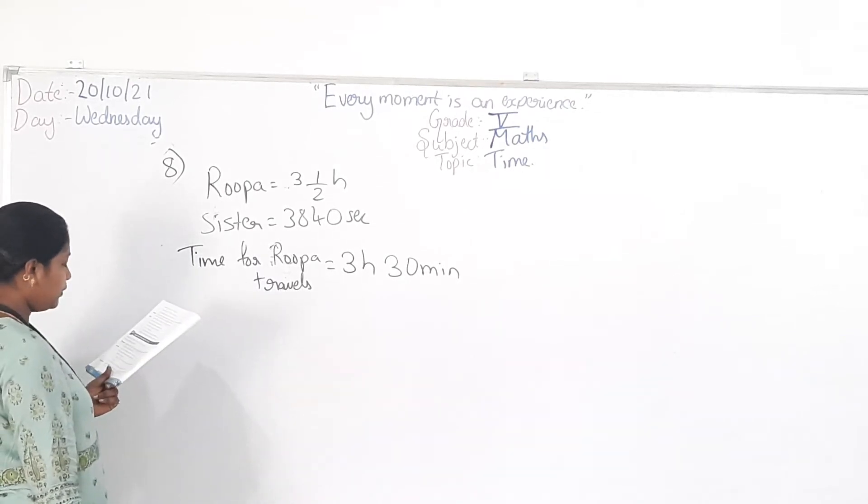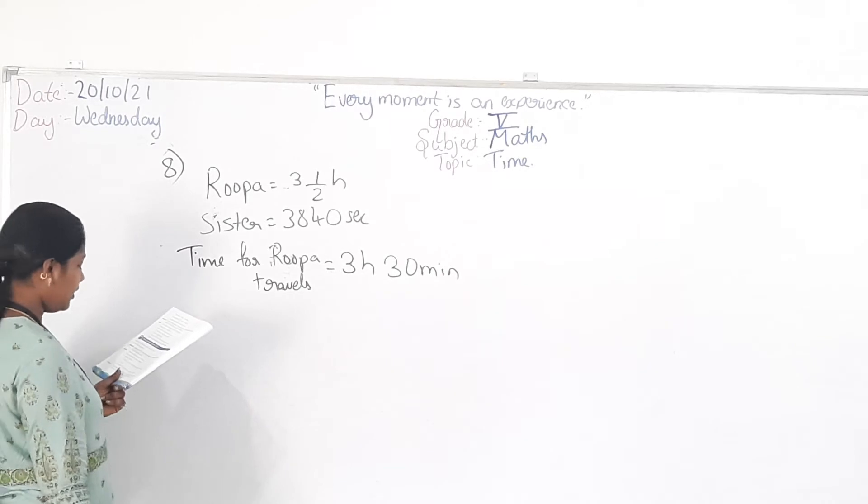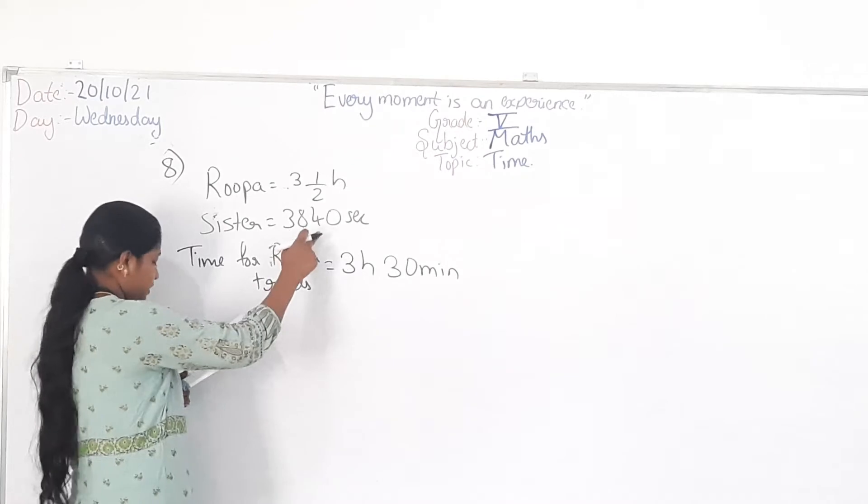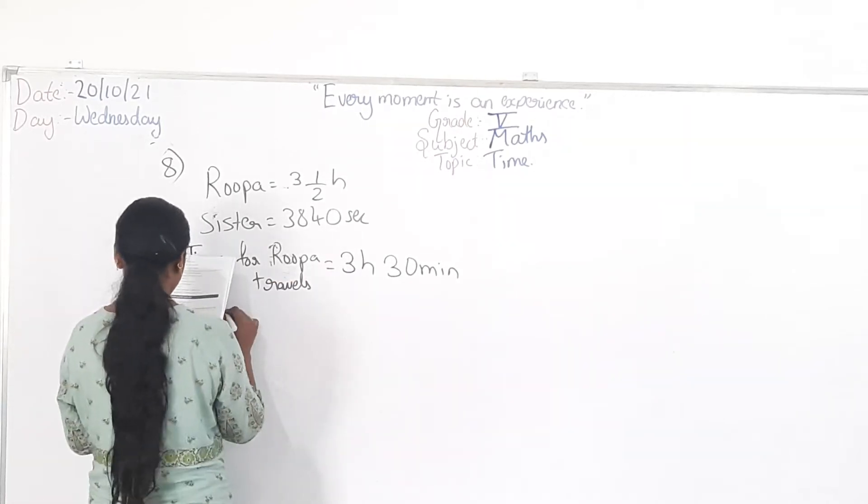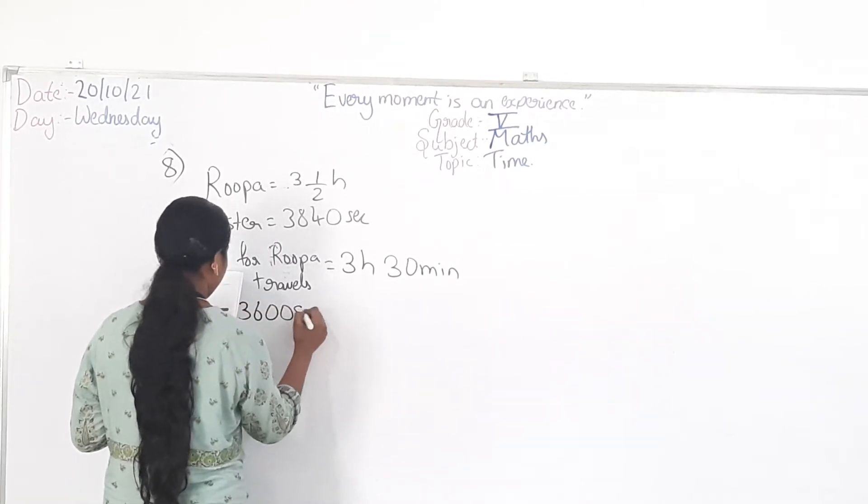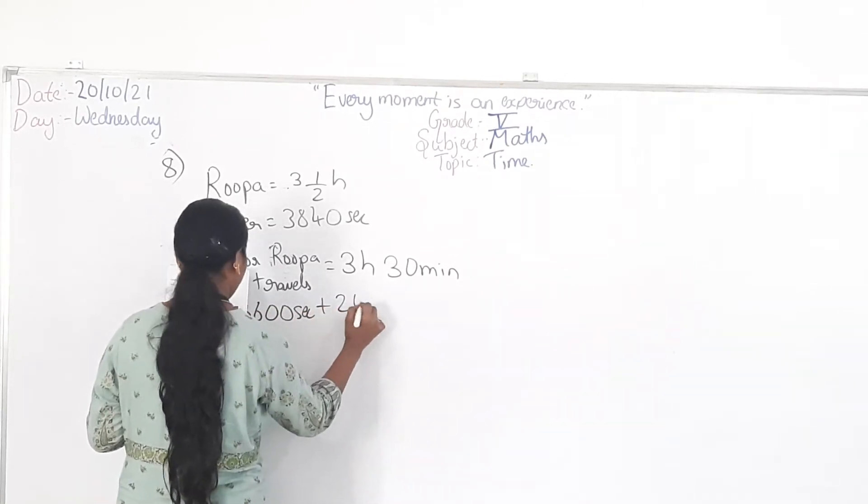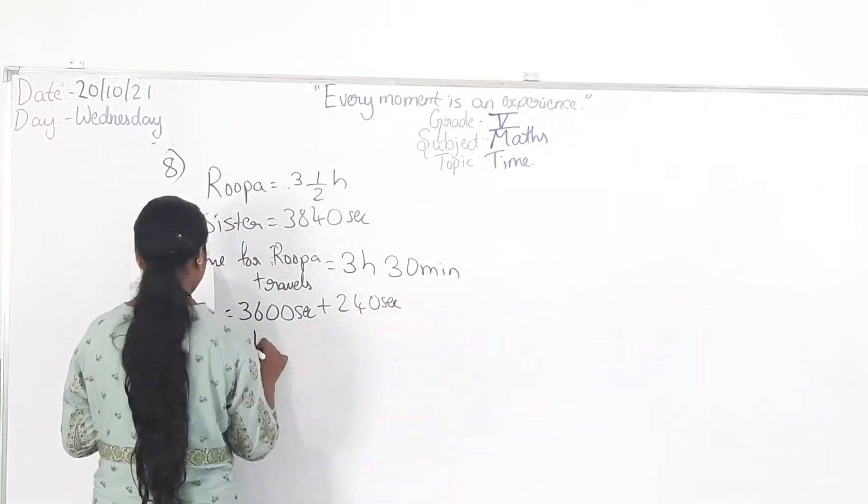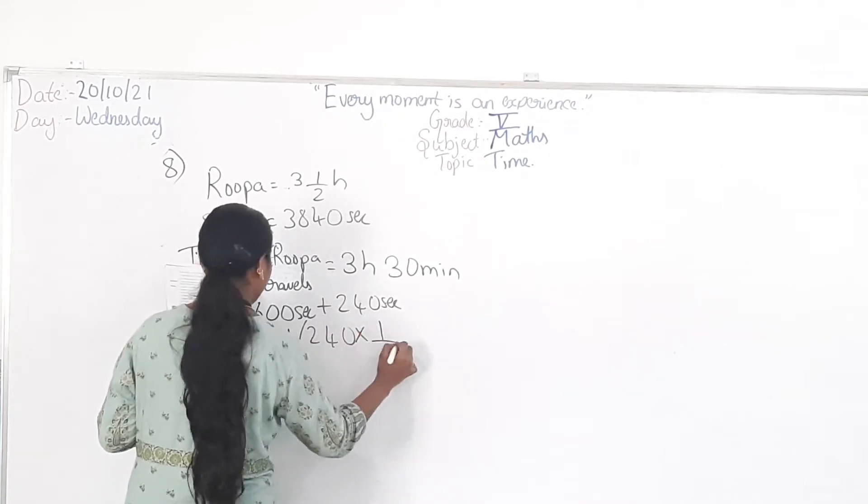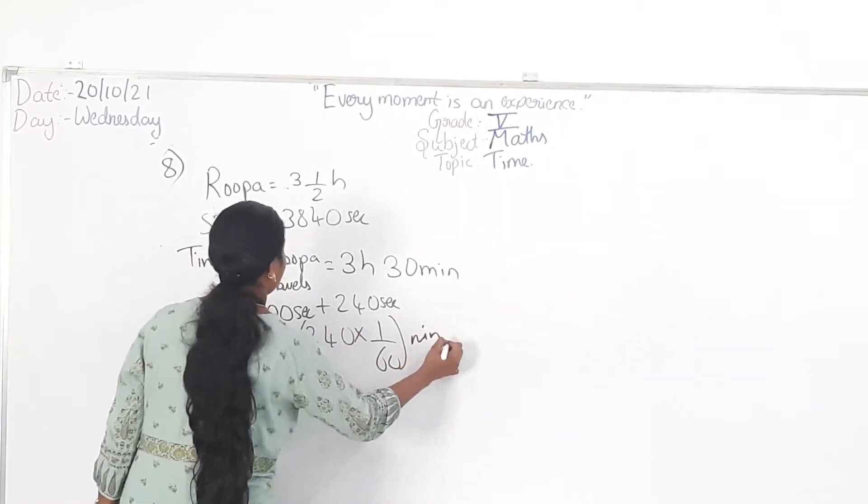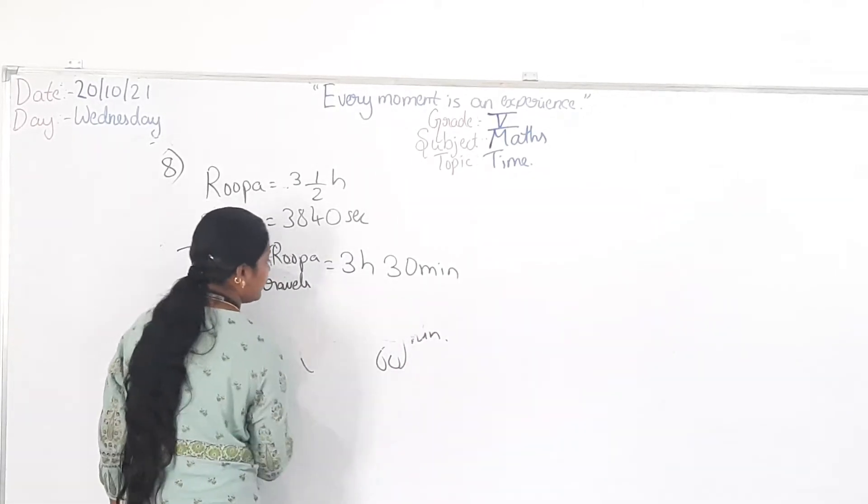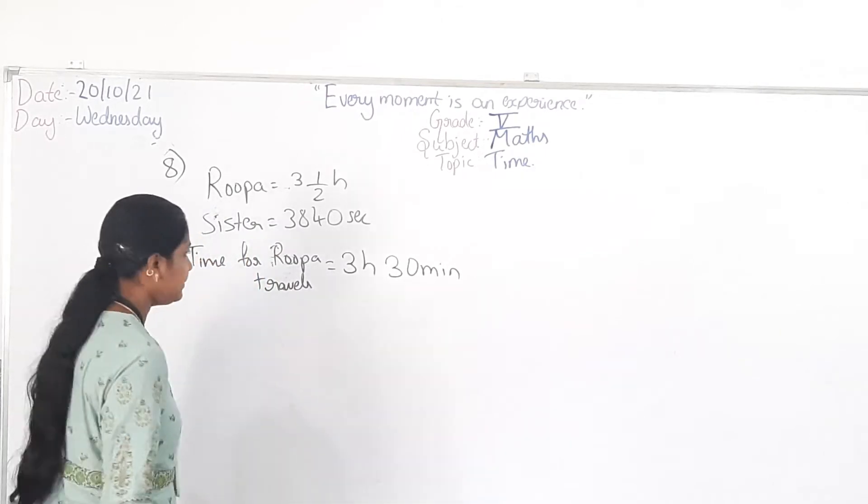Now what do we do? Convert this 3840 into minutes. So that will be 3600 seconds plus 240 seconds. That is 1 hour plus 240 into 1 by 60 minutes. Got it? Or else you can calculate like this if you are in confusion.